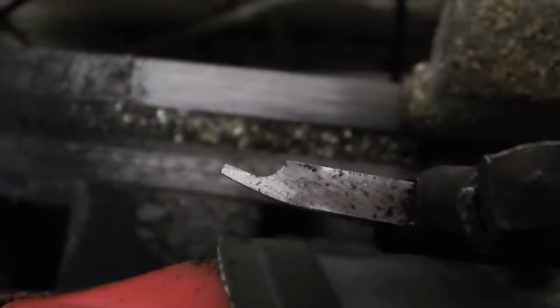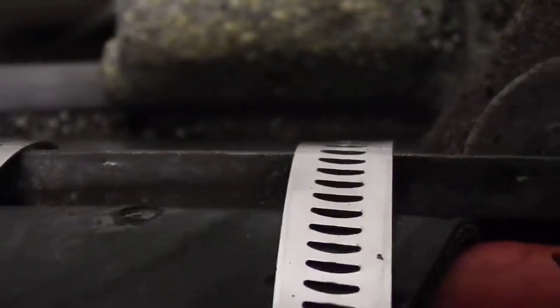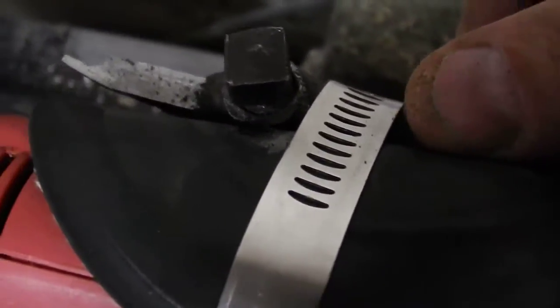Now my die grinder is just strapped to the tool post of the lathe, and it's strapped using some hose clamps and a piece of rubber to act as a gripping surface between the two.